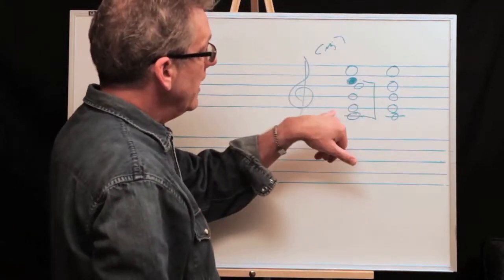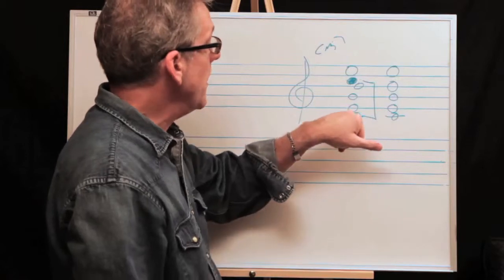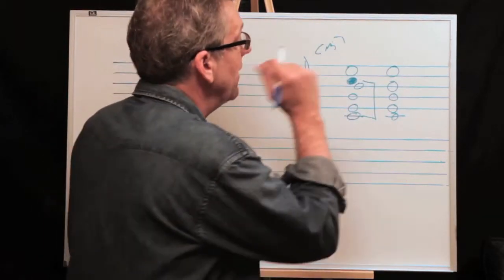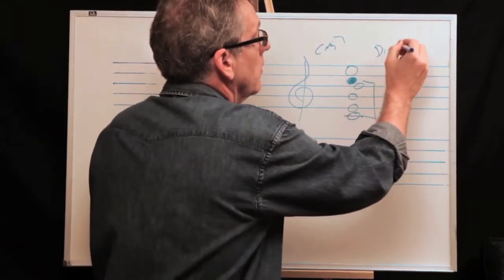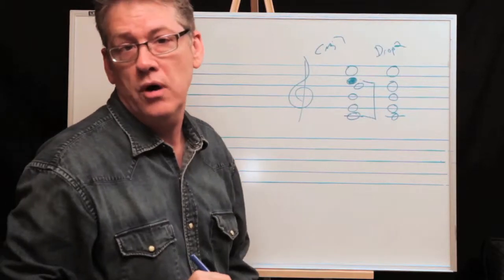And C. Okay, so instead of your trombone, or let's say whoever your lowest voice is playing the E, he's now playing the C. So better part of the range. Okay, so that's a drop two. Get my board from rattling around. That's a drop two.